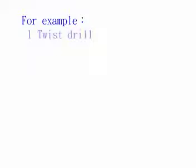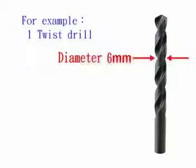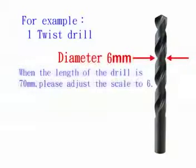For example: 1. Twist drill. The diameter of drill is 6 mm. When the length of the drill is 70 mm, please adjust the scale to 6.